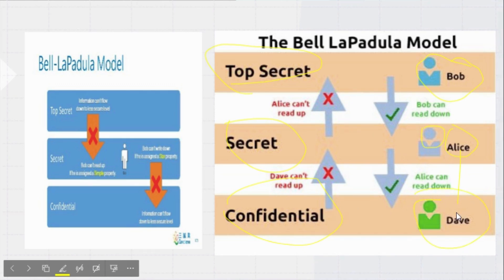But Dave cannot read the data of Alice because Dave is working on the confidential position, and Alice cannot read the data of Bob because he is working on the secret position. So a person who is working on a top position can read the data of the person working on a below position.